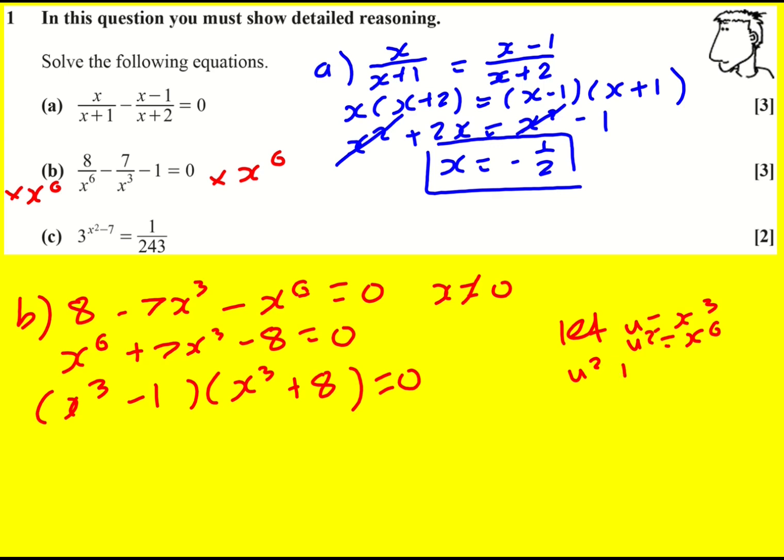So u squared plus 7u minus 8 is 0 and I'd factorize in a similar way. Find out u and then just replace that by x cubed to get exactly the same thing. x cubed as 1 or minus 8.